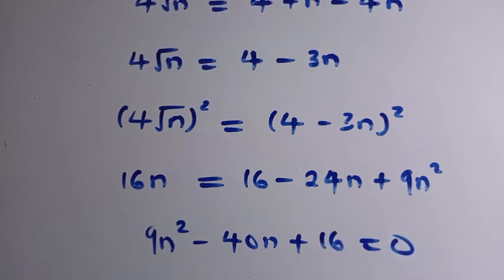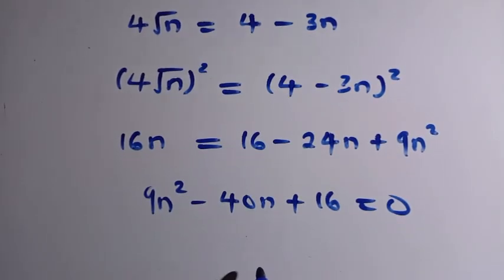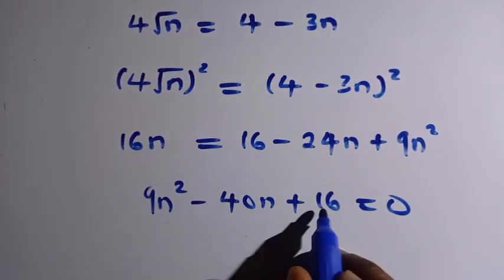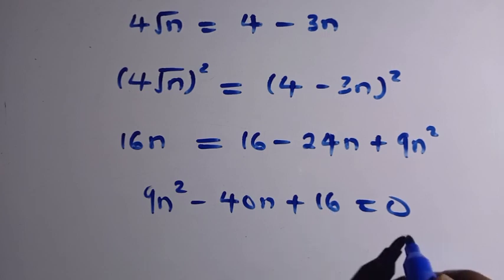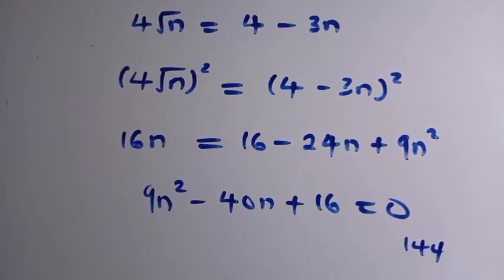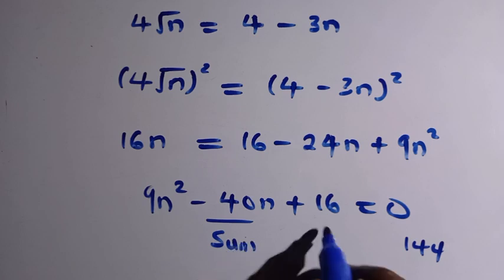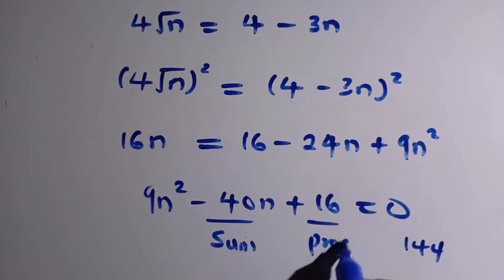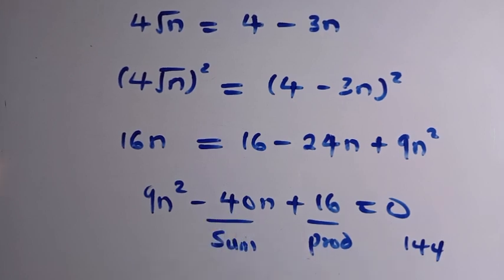We have a quadratic equation that is factorable. To factor 9n² minus 40n + 16, we multiply 9 by 16 which gives 144. We need two numbers whose product is 144 and whose sum is 40.